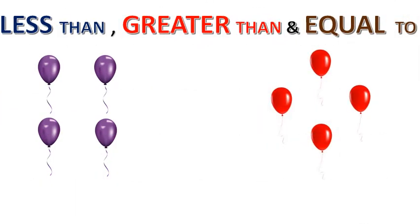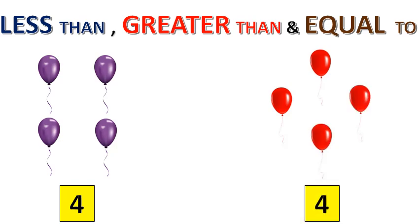Now here we have a set of balloons — purple color balloons and also red color balloons. You have to find out whether it is less than, greater than, or equal to. Let's count the purple ones: 1, 2, 3, 4. So we have 4 purple balloons. Now let's count the red ones: 1, 2, 3 and 4. So we have 4 red balloons. The number 4 is equal to 4, so the number of balloons are equal.